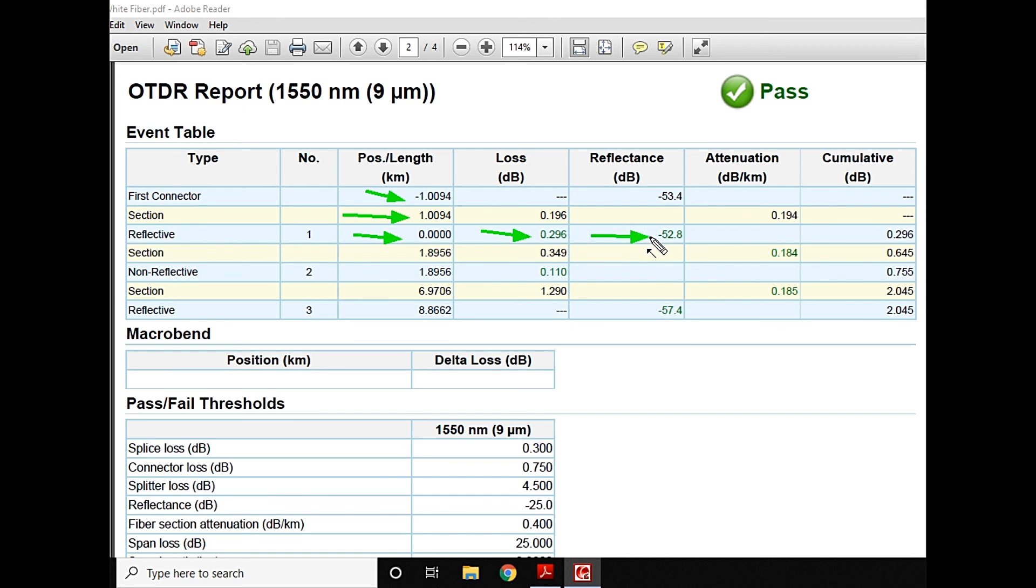Then again, we have a section of about 1.8 kilometers, and the total loss in this section is 0.349. After that I'm having another non-reflective event. Now this non-reflective event is the splice loss, and the splice loss is 0.110.